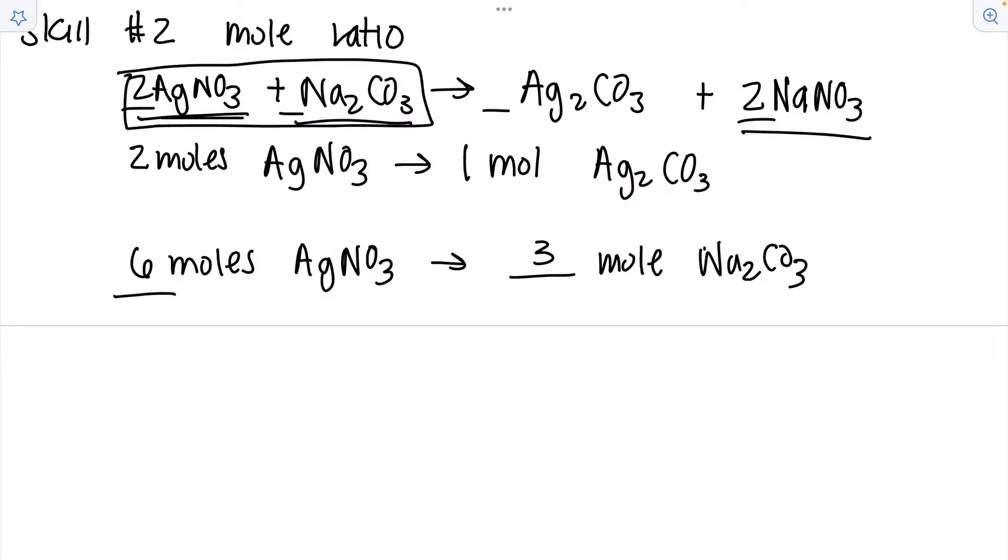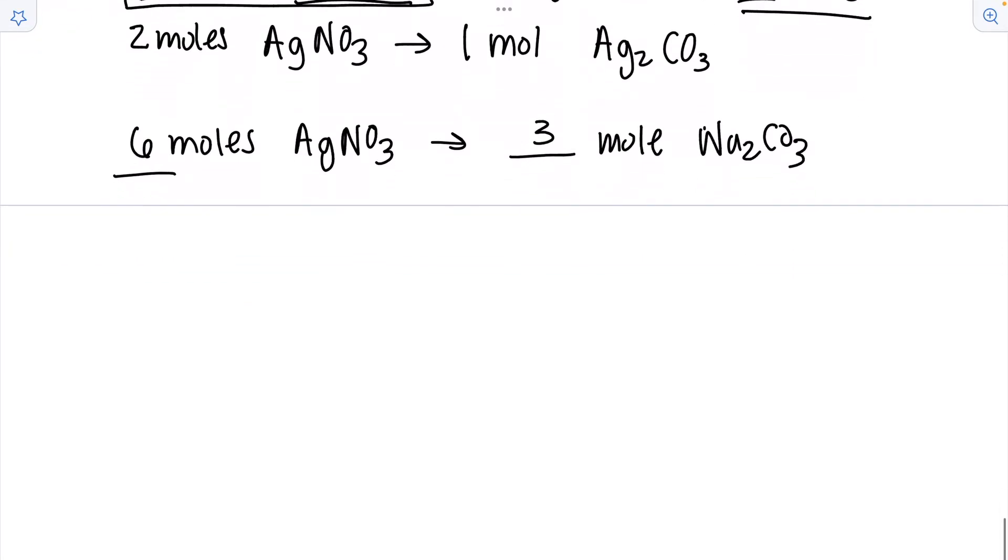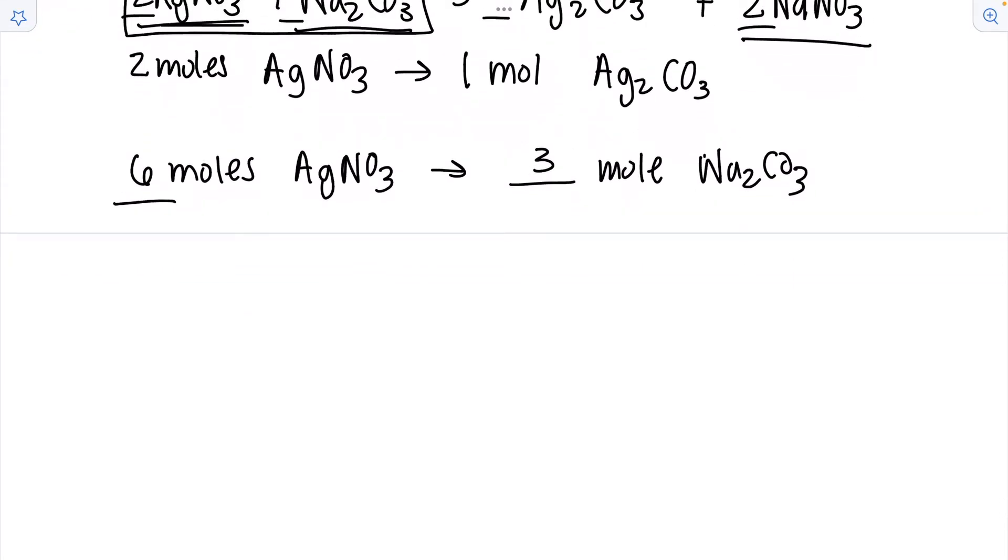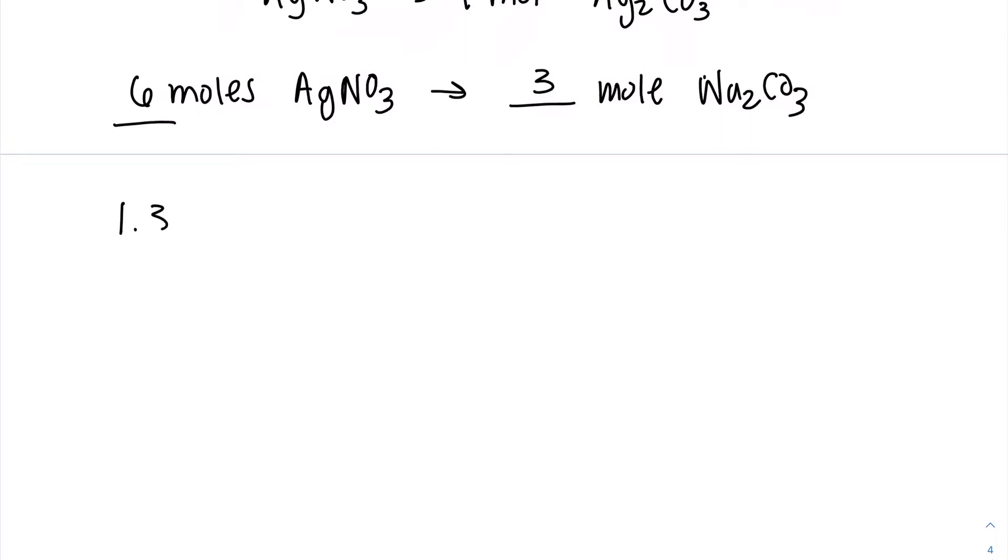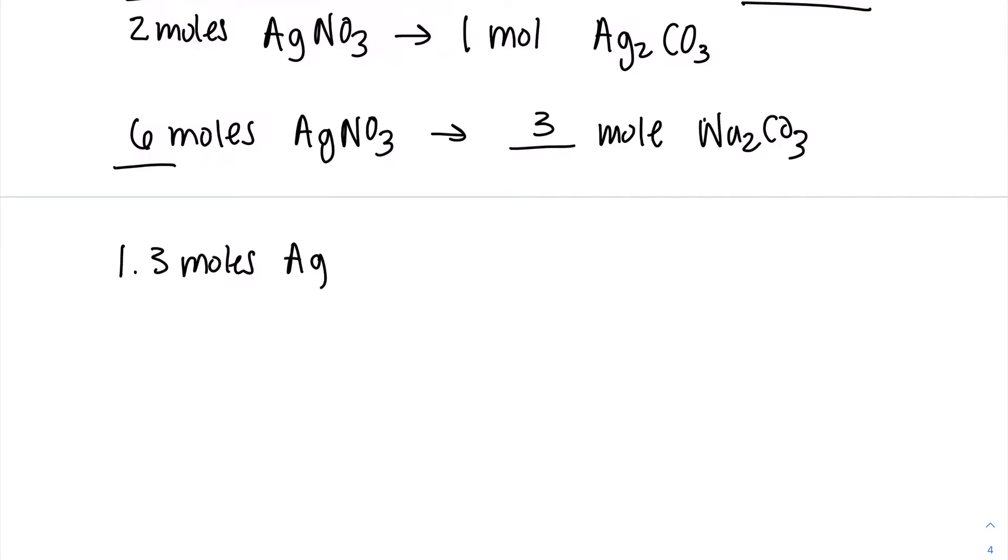Now the amount of moles that you're asked for will not always be round numbers. So let's say I had 1.3 moles of silver nitrate again, AgNO3. How many moles of silver carbonate would that make? I can set this up as a proportion using my mole to mole ratio.